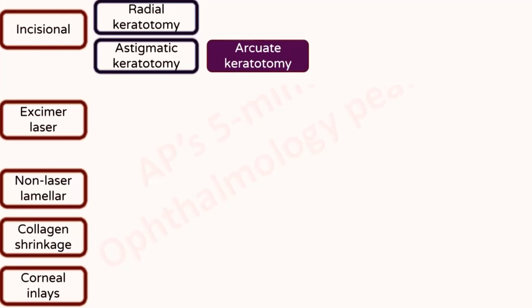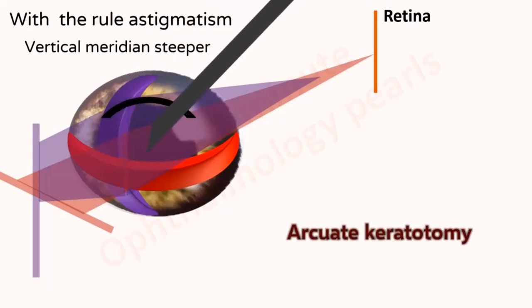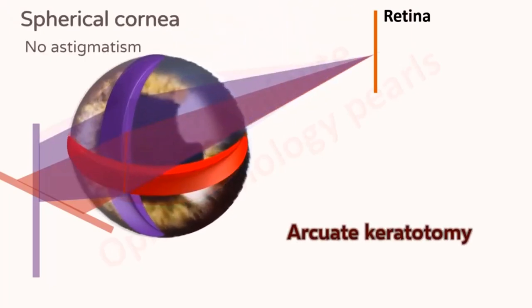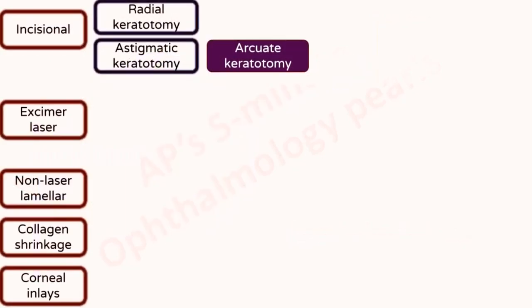Astigmatic keratotomy is of many types. In arcuate keratotomy, a diamond knife is used to create an arcuate incision up to 95% of the depth of the cornea in the steeper meridian to flatten it. Arcuate keratotomy is used mostly now for astigmatism correction along with cataract surgery or for astigmatism following keratoplasty.